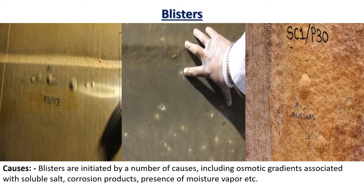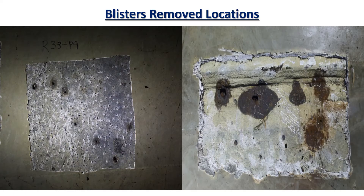These non-osmotic blisters, which we call bubbles, are often associated with characteristics of the substrate or environmental conditions during coating application. Here you can see the blister-removed locations in a tank bottom GRE lining. The tank bottom plate is severely corroded. The corrosion originated from the underside of the tank bottom plate due to some improper soil condition, and the GRE lining got exposed to the contaminants which led to the formation of blisters.